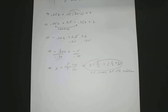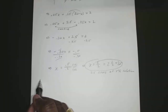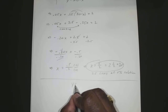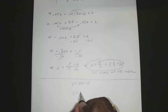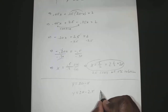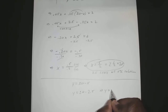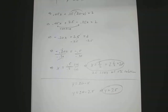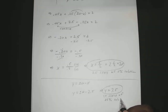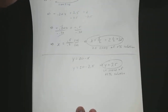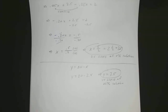Now we have to find how many liters of the 25% solution. We can do that by Y equals 10 minus X, so Y is equal to 10 minus 2.5, which means Y is just equal to 7.5. So you need 7.5 liters of the 25% solution. Any questions on that one?